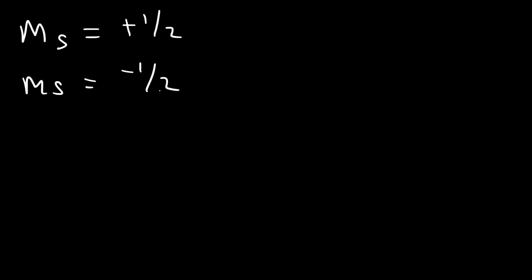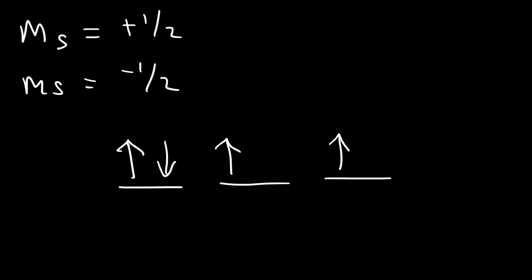The last quantum number you need to be familiar with is the electron spin. There are only two possibilities: an electron can spin in a clockwise direction or counterclockwise, so it can be positive one-half or negative one-half. Within an orbital, you place the electron with an up arrow or a down arrow — when spin is up, m s is plus one-half; when spin is down, it's negative one-half. According to Pauli's exclusion principle, every electron within an atom has a unique set of four quantum numbers — you can think of them as the address of each electron.